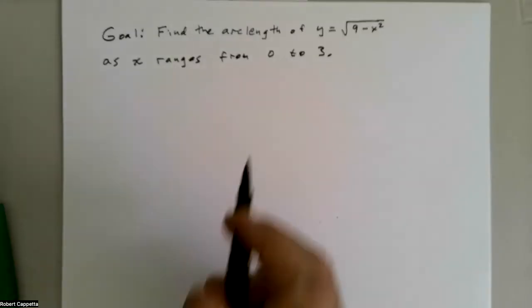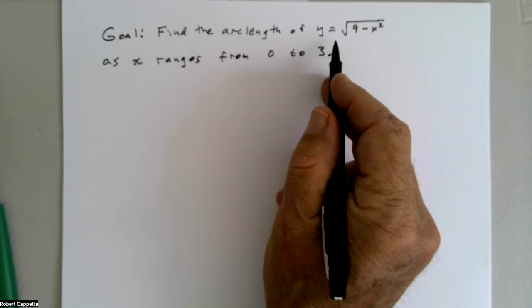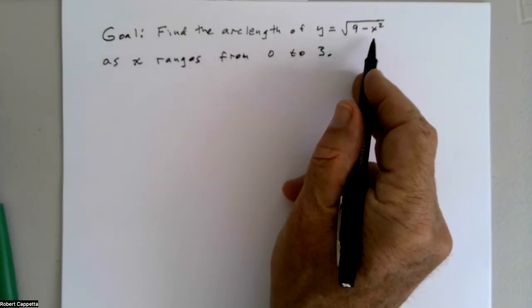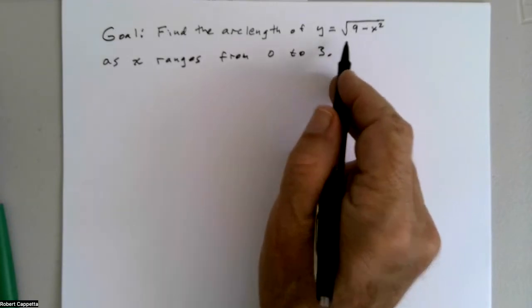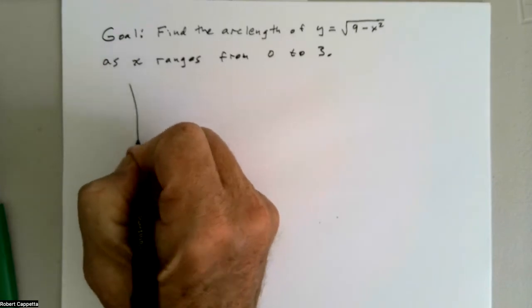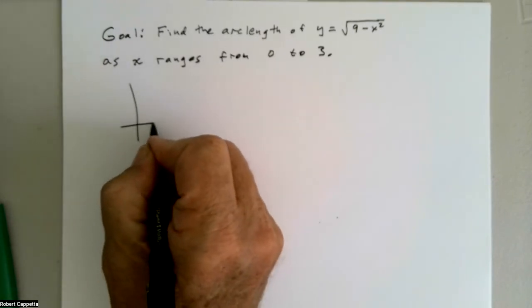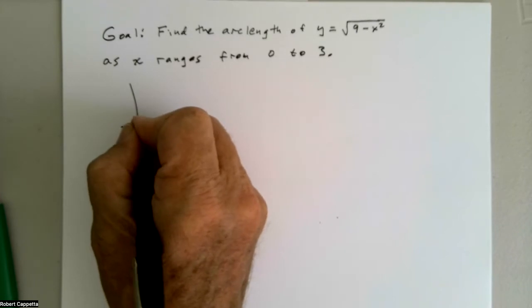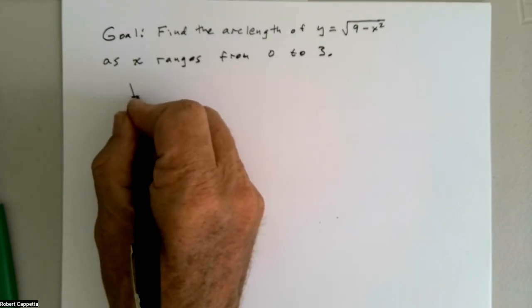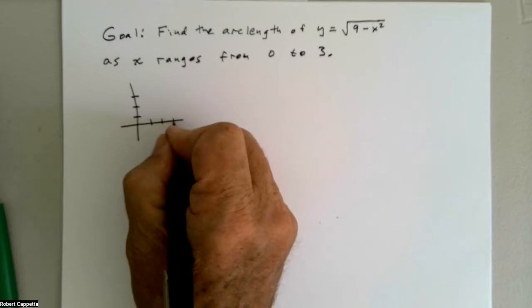Our goal is to find the arc length of y equals the square root of 9 minus x squared as x ranges from 0 to 3. Let's see what that looks like — plotting points at 1, 2, 3 on both axes.